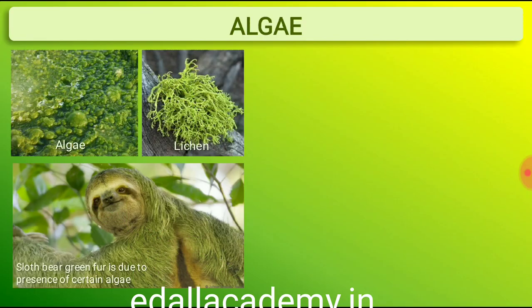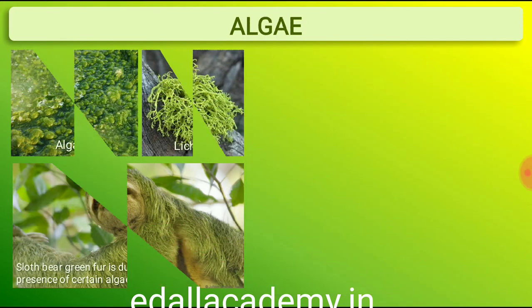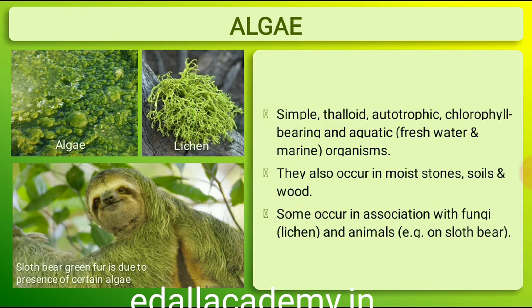Algae are chlorophyll-bearing, simple, thaloid, autotrophic and largely aquatic, both freshwater and marine organisms. They occur in a variety of other habitats: moist stones, soils and wood.